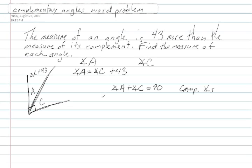All right, angle A is in terms of C as angle C plus 43 plus angle C equals 90 degrees. Then twice the measure of angle C plus 43 is equal to 90.